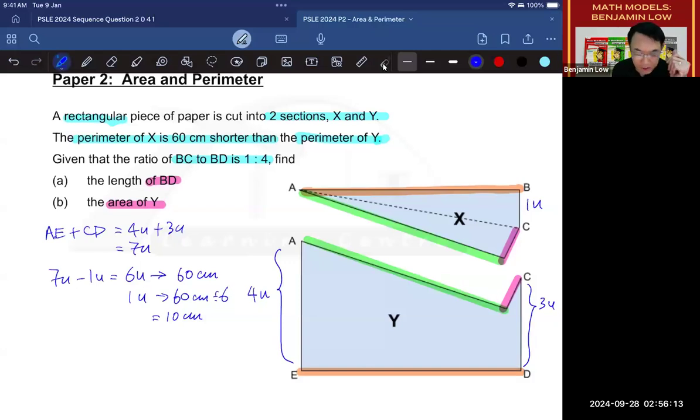Now that you know this is 10 cm, let's try to answer the questions. The first question is, what is the length of BD? Well, where is BD? BD is B to C and C to D. And the length of BD is 4 units, which is the same as the length of AE. So basically finding AE and finding BD is the same thing. Okay, so I'm going to say that AE is equals to BD. Okay, because they are the opposite sides of the same rectangle. And since AE is 4 units, then I'll be finding 4 units. So this is 4 units. And since 1 unit is 10, then 4 units must be 4 times 10, giving you 40 cm. So that's your answer for A, 40 cm.